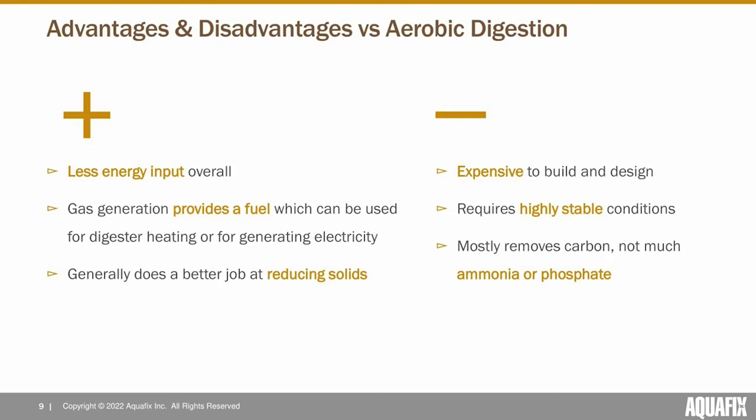A couple downsides: anaerobic digesters are expensive to build and design, and they require highly stable conditions. Thanks to our fragile methanogens, they can have a lot of upsets if you don't have good condition stability. Most digesters are efficient at removing carbon but not great at ammonia and phosphorus — you need an additional process to remove ammonia and phosphate. In fact, they'll tend to release more ammonia and phosphate into solution, necessitating a step of aerobic digestion afterwards.